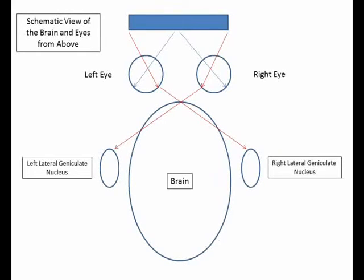What happens next is that the information from the right eye passes to the left lateral geniculate nucleus, and the information from the left eye on the nasal part passes to the right lateral geniculate nucleus.